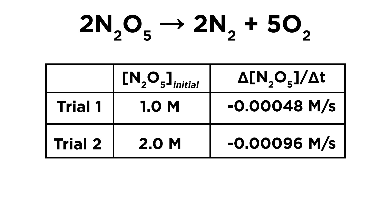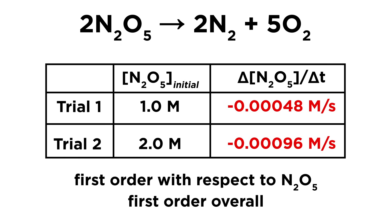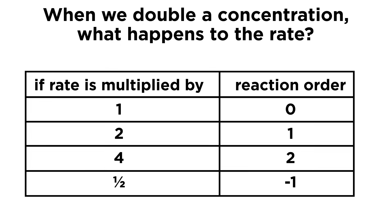Let's look at the reaction from before. We can clearly see that doubling the initial concentration of the reactant makes it disappear twice as fast, so the reaction is first order with respect to N2O5 and therefore first order overall.